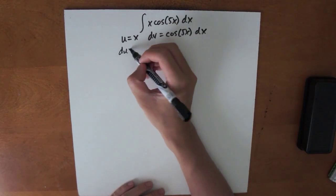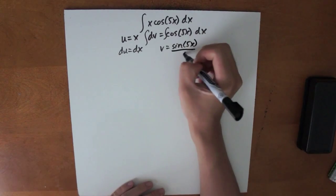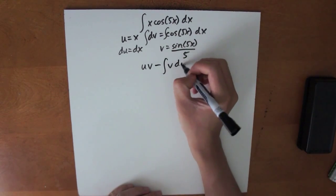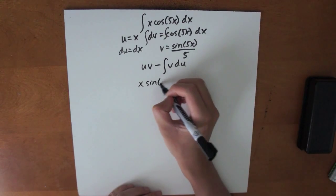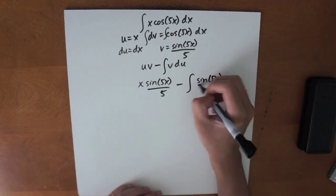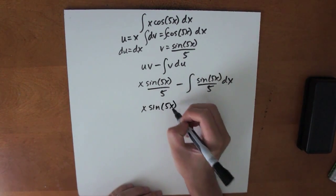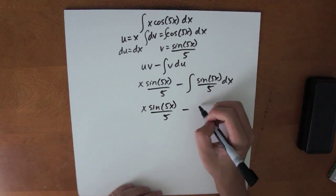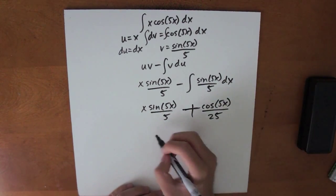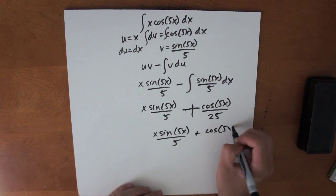We differentiate here — du is equal to dx. We integrate here — v is equal to sine of 5x divided by 5. Then we use the formula u times v minus the integral of v times du. So we get x sine 5x over 5 minus the integral of sine of 5x over 5 dx. Evaluating the integral, we get x sine 5x over 5 minus negative cosine 5x divided by 25. This becomes a positive, so the final answer is x sine 5x over 5 plus cosine 5x over 25.